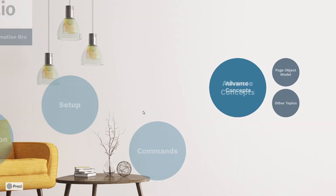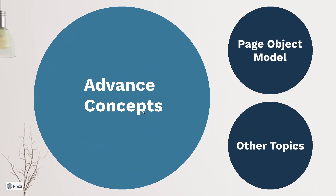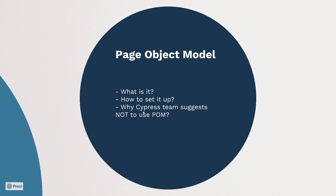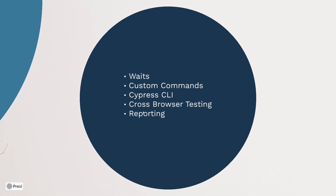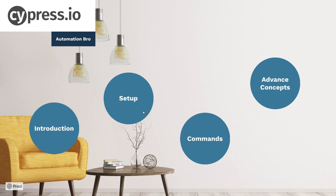In our final section we will go over some advanced concepts such as the page object model — what it is, how to implement it with Cypress, and why the Cypress team suggests not to use the page object model and what you should use instead. We'll also cover how to handle waits, how to create custom commands, how to run your tests using the Cypress CLI, how cross-browser testing works with Cypress, and how to generate reports. This series will provide you with a solid understanding of Cypress, and I hope you're excited about learning Cypress with me.